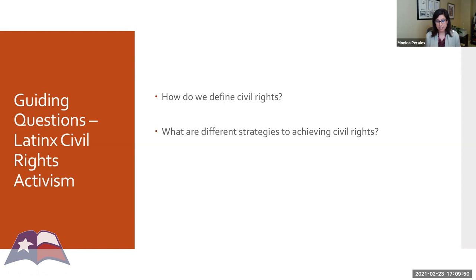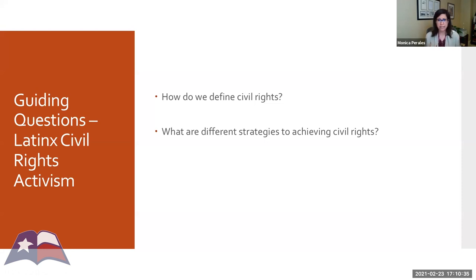Second, what were the different strategies to achieving civil rights? It's important for students to understand that the roots of civil rights activism really don't begin in the mid-20th century — they extend further back. We want to think about various forms of protest: civil rights activism through courts, through legal cases, through the political process, but also at the grassroots and through labor organizations. These approaches were dependent on the time period, class position, and access.